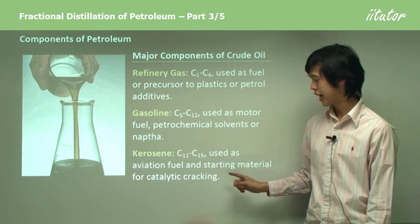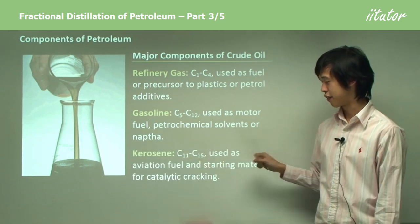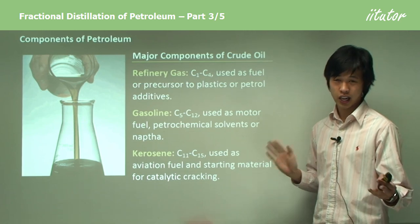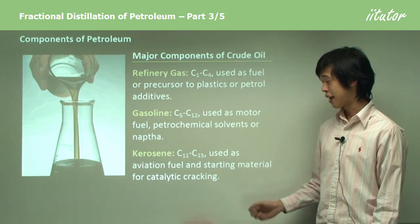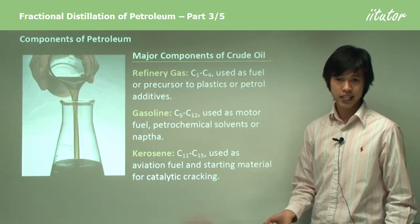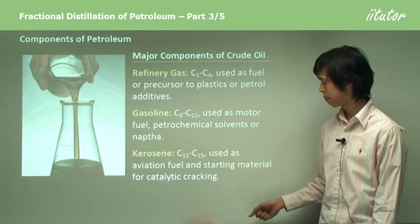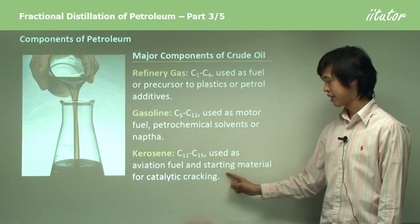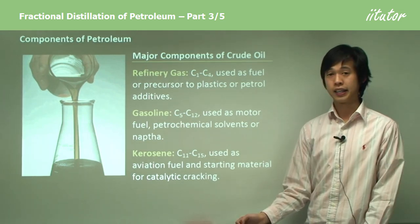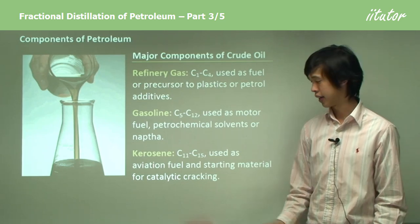Kerosene is C11 to C15 — so 11 to 15 carbons long. It's used as aviation fuel, so we're talking planes here — gas turbine fuel. It's also a starting material for catalytic cracking, which we'll go through shortly.